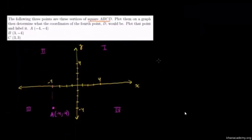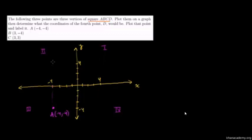Sometimes someone might ask you what quadrant a point is in. If both coordinates are negative, you're in the third quadrant. If only y is negative but x is positive, you're in the fourth. If both are positive, you're in the first. If y is positive but x is negative, you're in the second. We'll talk about that as we plot these points.